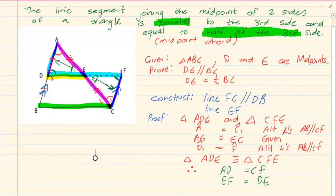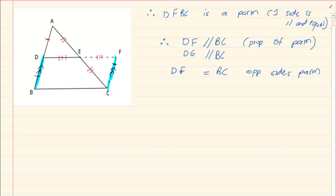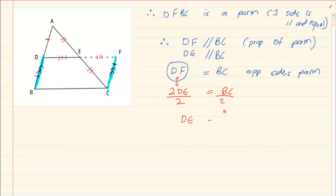This is one of the things we had to prove — that DE is parallel to BC, since DE is part of line DEF. So we have proven the first part. Now for the second part: DF equals BC because they are opposite sides of a parallelogram. But DE and EF make up DF, and since DE equals EF, two times DE equals DF equals BC. Dividing by 2: DE equals half of BC. That is what we were asked to prove.